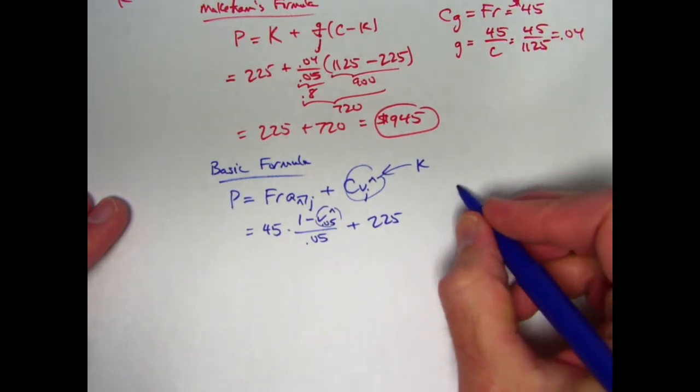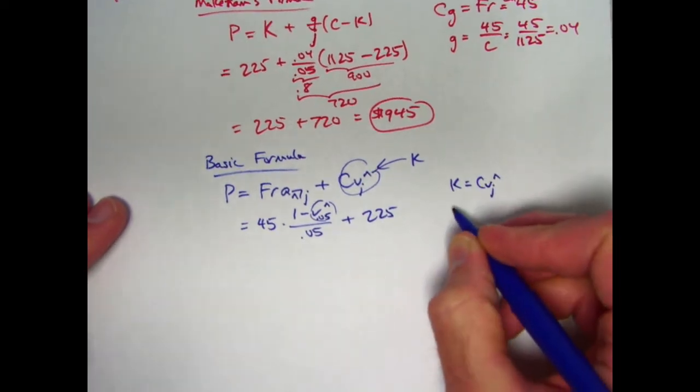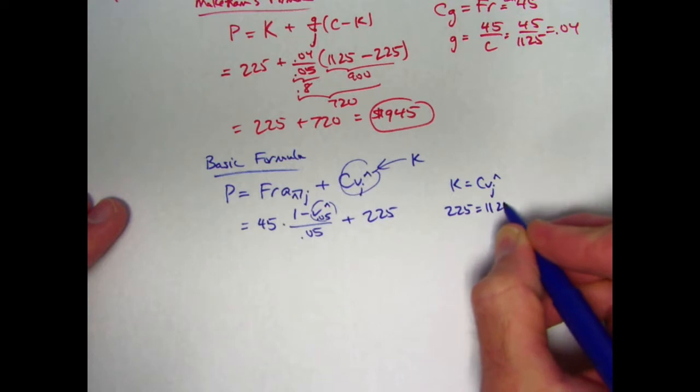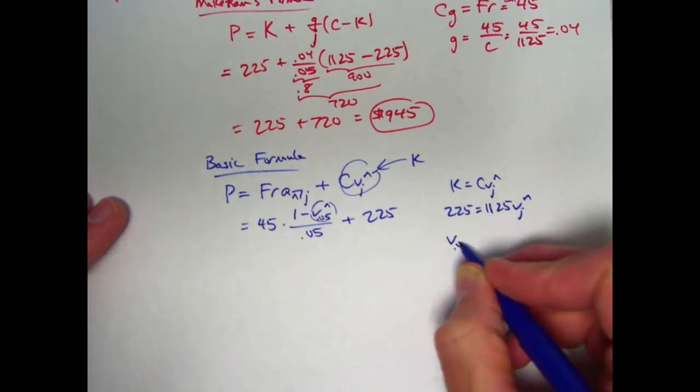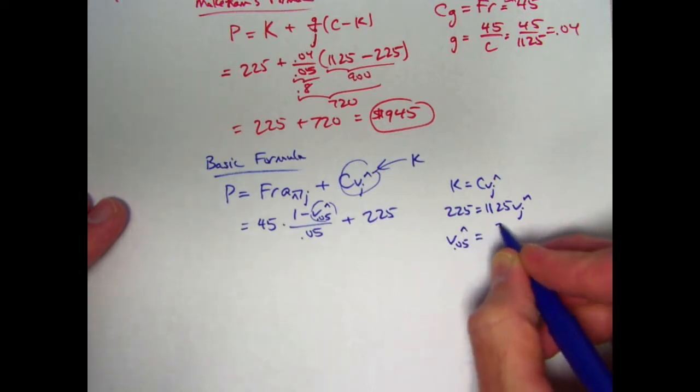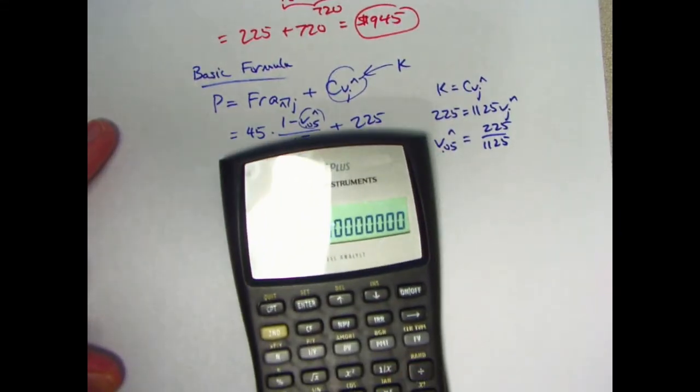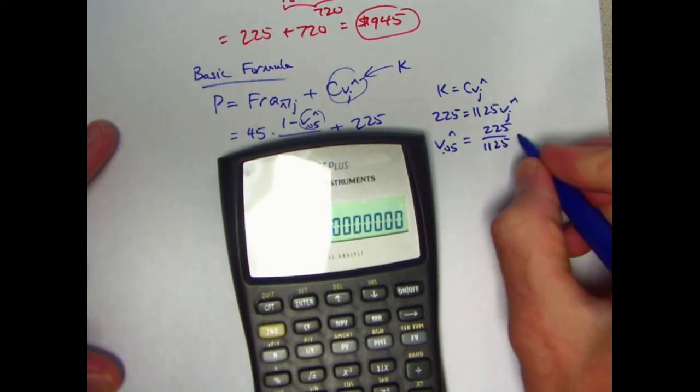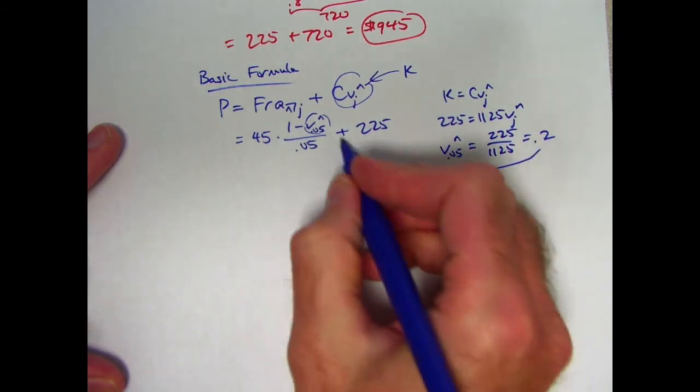You actually can just solve for v to the n. You don't need to solve for n. You don't need to use logarithms here. We do know that K is C times v at j to the n. We know that K is 225 and C is 1125. So we can solve this for v at j to the n. V sub 0.05 to the n is going to be 225 divided by 1125. And this turned out pretty nice as well. I believe it's 0.2. 225 divided by 1125 is 0.2. There you go. Sorry about that. Plug that in. Plug that in up here.